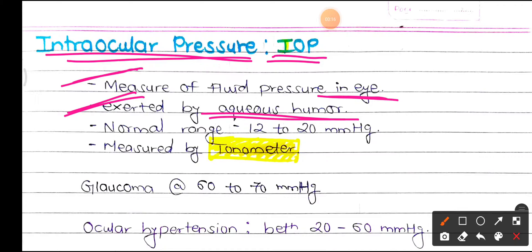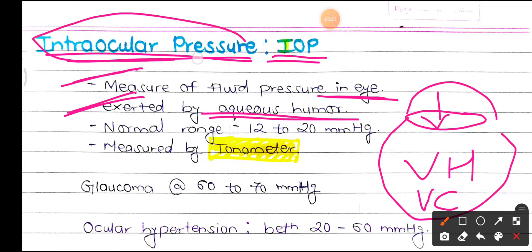As we know, aqueous humor is present between the lens and the cornea, and behind that we have the vitreous humor. The chamber which contains the vitreous humor is the vitreous chamber. So the pressure exerted by the aqueous humor on the vitreous chamber is the intraocular pressure.